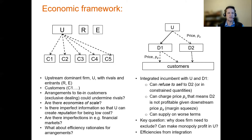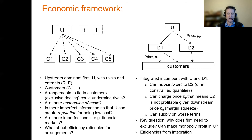The upstream firm could reach agreements with customers that they will only deal with it on an exclusive basis, so rivals and entrants don't have a route to market and can't reach customers. There could be loyalty-inducing rebate arrangements which achieve the same effect. Or the upstream firm could charge very low prices to induce customers to deal just with it — raising the question of whether those prices are predatory or simply vigorous competition on the merits, since low prices are generally good for customers. We've got to take into account economies of scale, the ability to create a reputation, and weigh these against efficiency rationales.